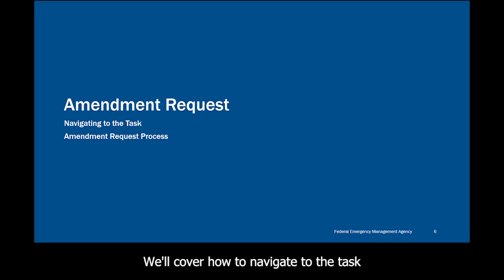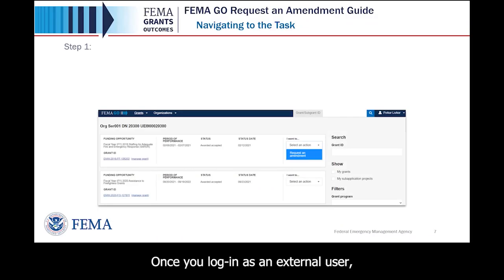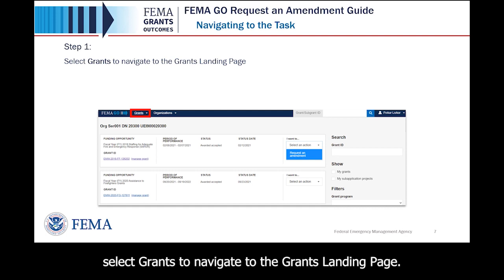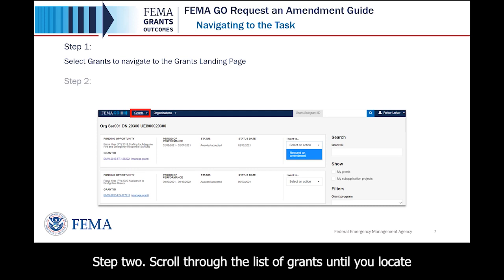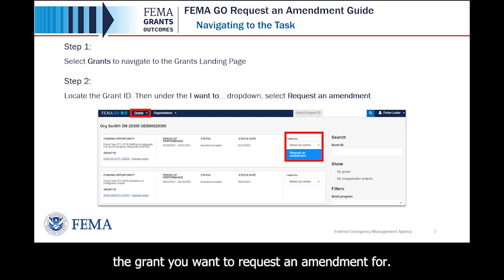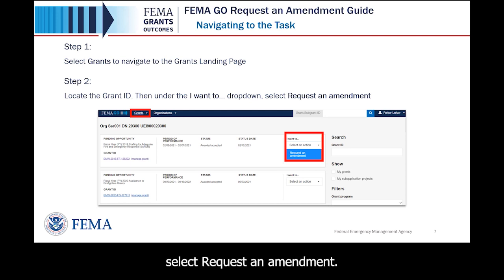Now let's walk through how to request an amendment. We'll cover how to navigate to the task and the amendment request process. Once you log in as an external user, you will be directed to the Welcome screen. Step 1: At the top of the Welcome screen, select Grants to navigate to the Grants landing page. Step 2: Scroll through the list of grants until you locate the grant you want to request an amendment for. Then, under the I want to drop down, select Request an Amendment.